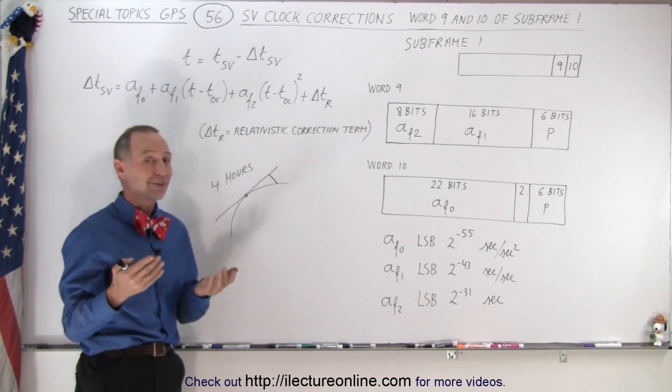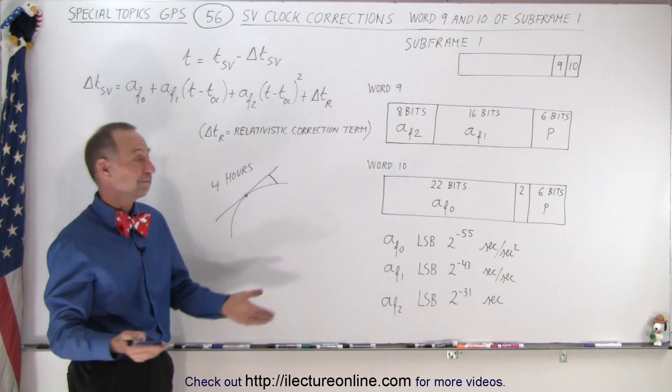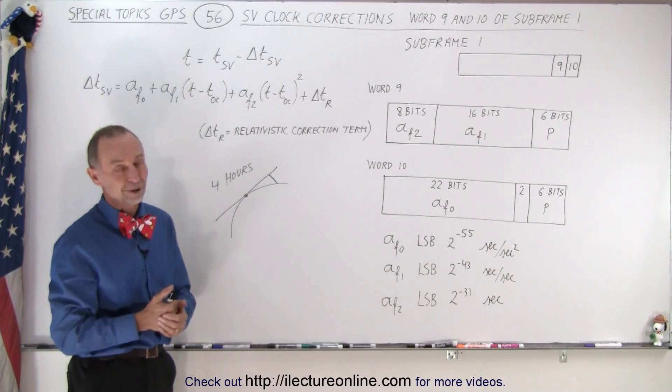So that is what needs to be done to make sure we know exactly what the locations of the satellites are and that is how we do that using words 9 and 10 in subframe 1.